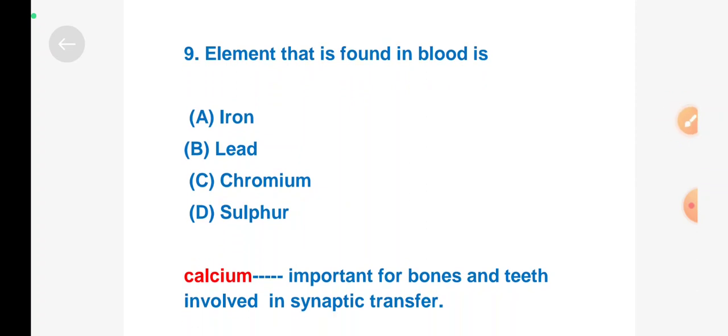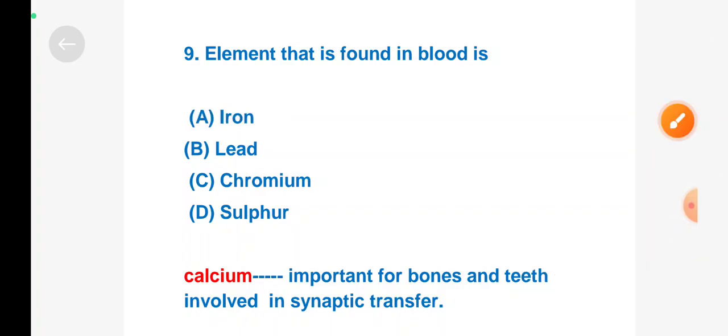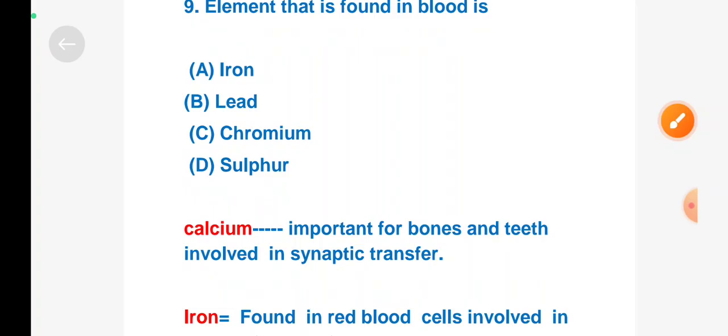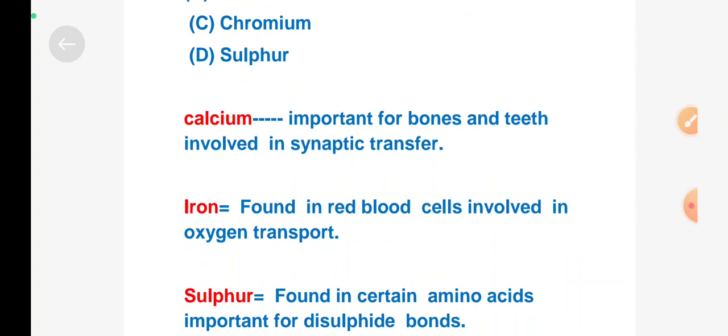Next question: Element that is found in blood is - Option A: iron, Option B: lead, Option C: chromium, Option D: sulfur. Right answer is Option A, iron. Calcium is important for bones and teeth, involved in synaptic transfer. Iron is found in red blood cells, involved in oxygen transport. And sulfur is found in certain amino acids, important for disulfide bonds.